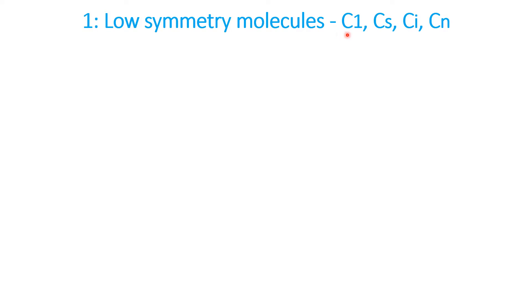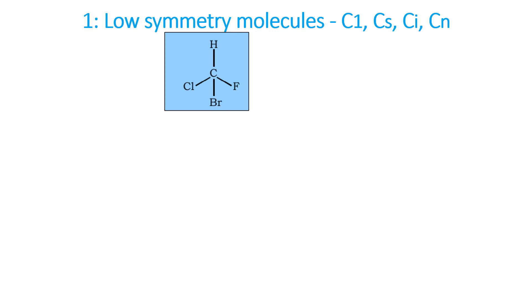In low symmetry molecules, there are four types. C1: if you rotate the molecule 360°, you get the same molecule back. Only one symmetry operation is possible — the identity (E). All molecules have the identity operation, but in C1, only identity is there with no other operations.